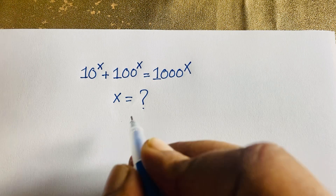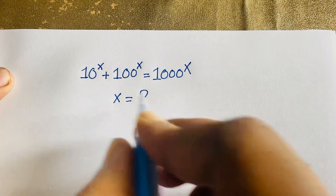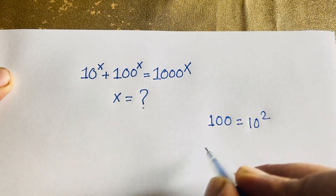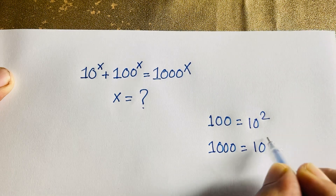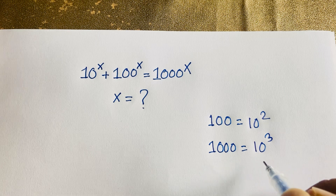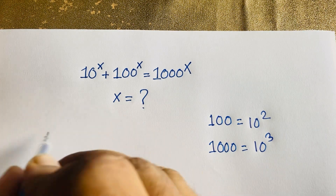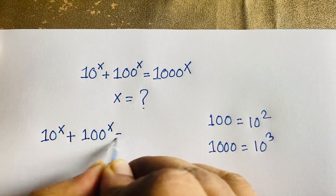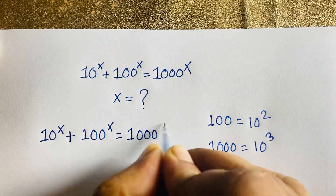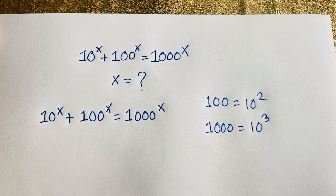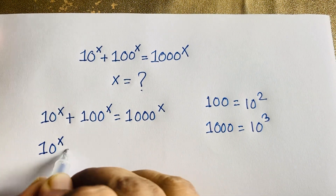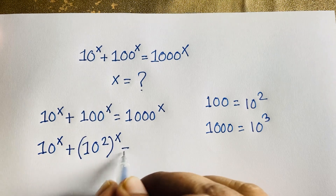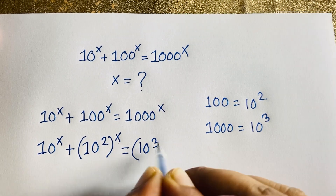It is interesting because here we have 10, 100, and 1000. Now 100 can be written as 10 squared, and 1000 can be written as 10 to the power 3, since 10 times 10 times 10 equals 1000. So our equation is 10^x plus (10²)^x equals (10³)^x.